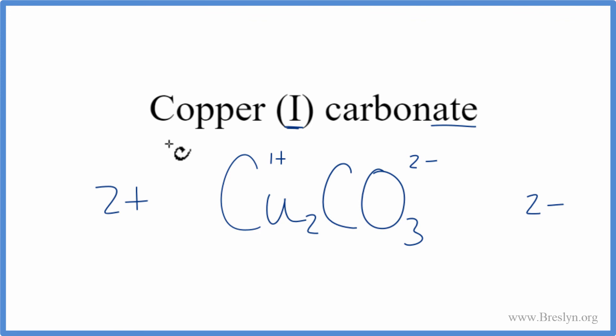This is the correct formula for copper one carbonate, Cu2CO3. Let's clean it up a bit, and we're done. This is Dr. B with the formula for copper one carbonate, Cu2CO3. Thanks for watching.